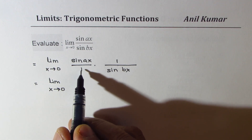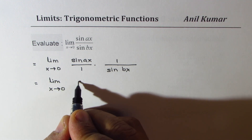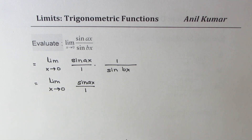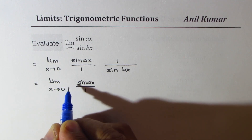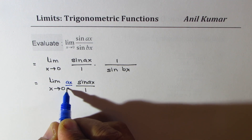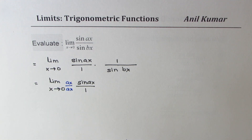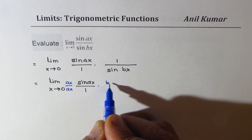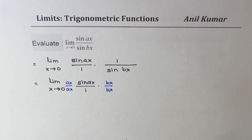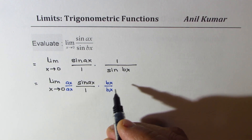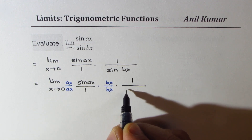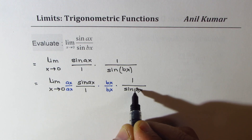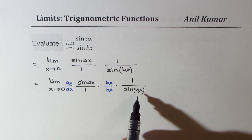For the first term, we need ax in the denominator. We have sine ax over 1, and we are going to multiply and divide by ax. In the second term, we want bx, so we'll multiply and divide by bx. So that makes 1.